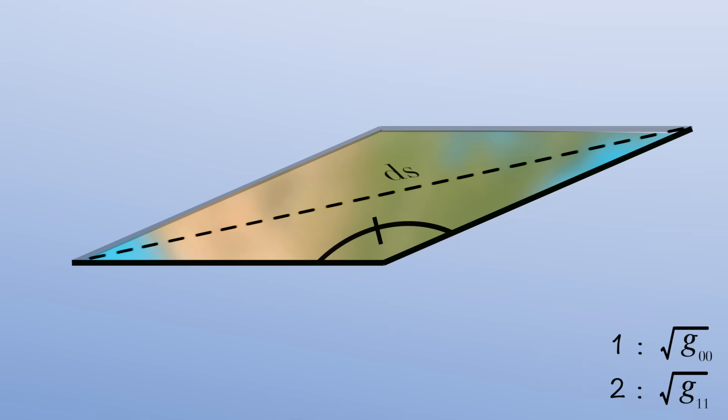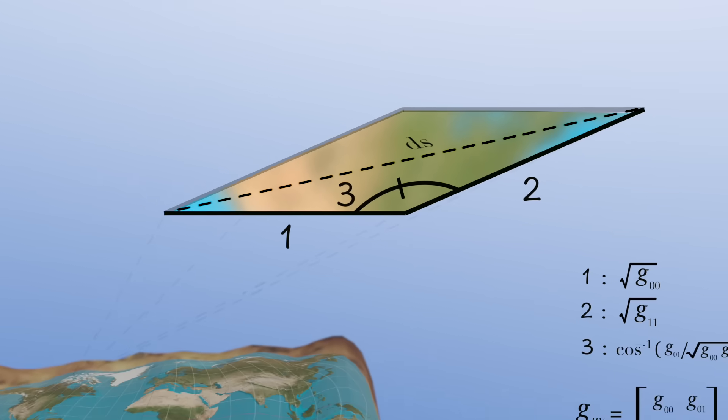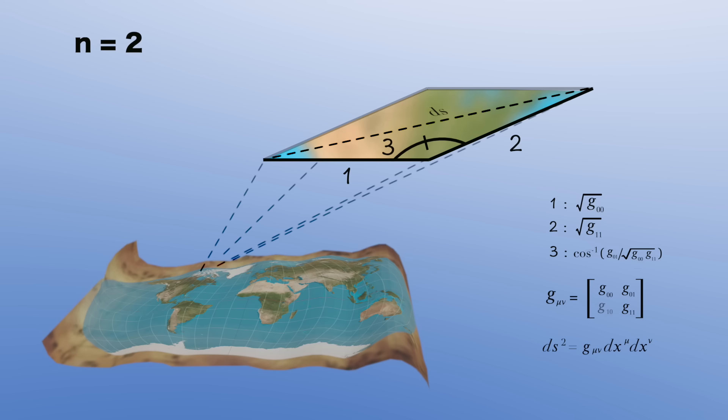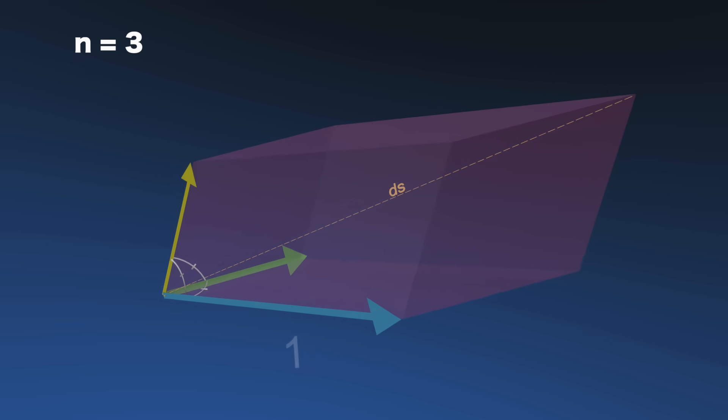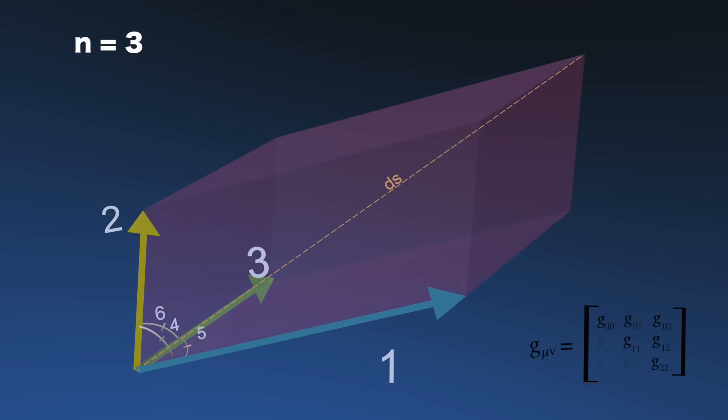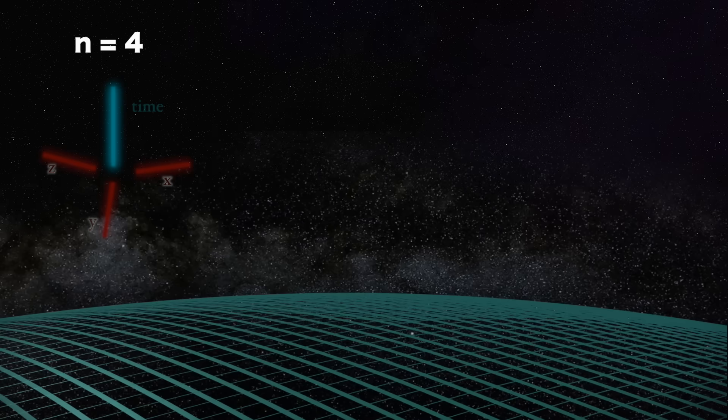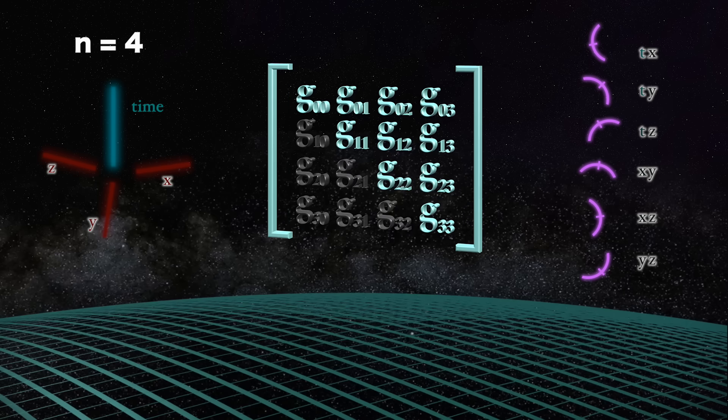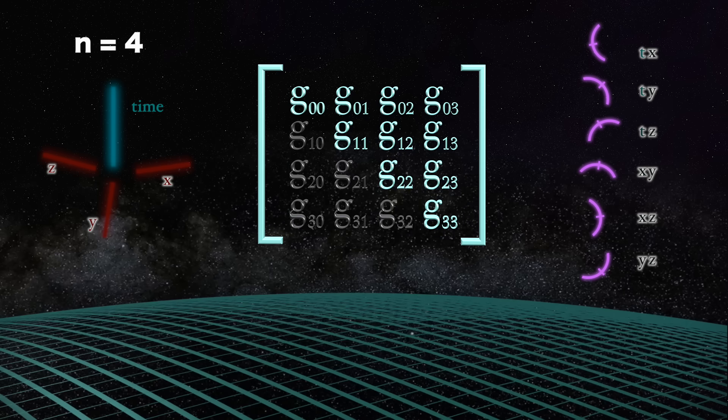So in two dimensions, you'll need three numbers at each point on your map to characterize the metric. While in three dimensions, you'll need six numbers. And for four dimensions, like that of general relativity's space-time, you'll need four lengths and six angles, or ten numbers total to fully characterize the metric at any point.